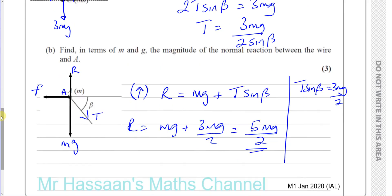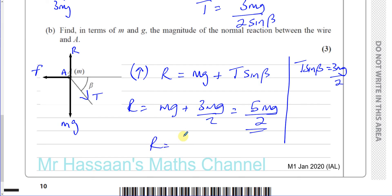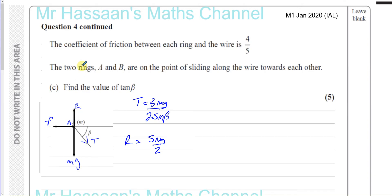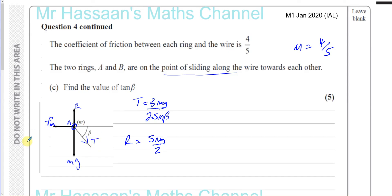Part C: the coefficient of friction between each ring and the wire is 4/5. The two rings A and B are on the point of sliding along the wire towards each other — find the value of tan beta. Since the ring is on the point of sliding, friction has reached its maximum value F_max. So F_max equals mu times R.